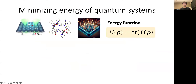Minimizing the energy of quantum systems is a fundamental problem in many fields, including physics, chemistry, and material science. This is the problem of finding or characterizing a quantum state rho that minimizes the energy function of the system, which is usually taken as the expectation of a Hamiltonian operator H.